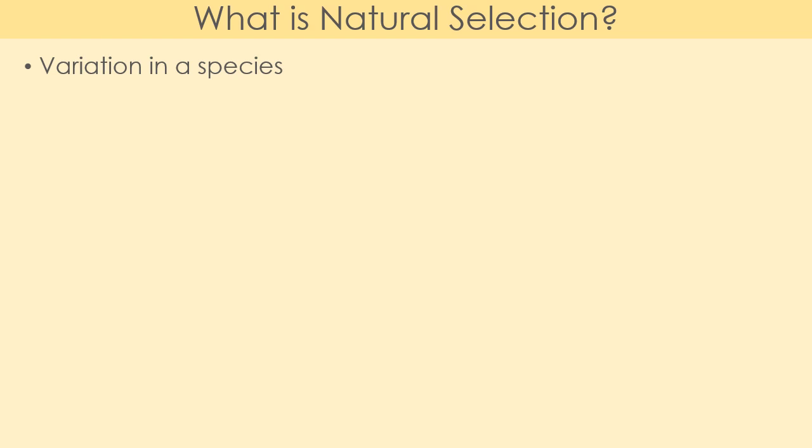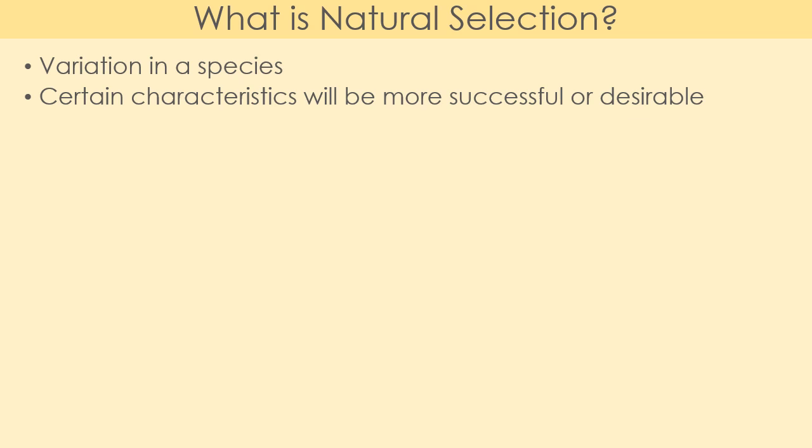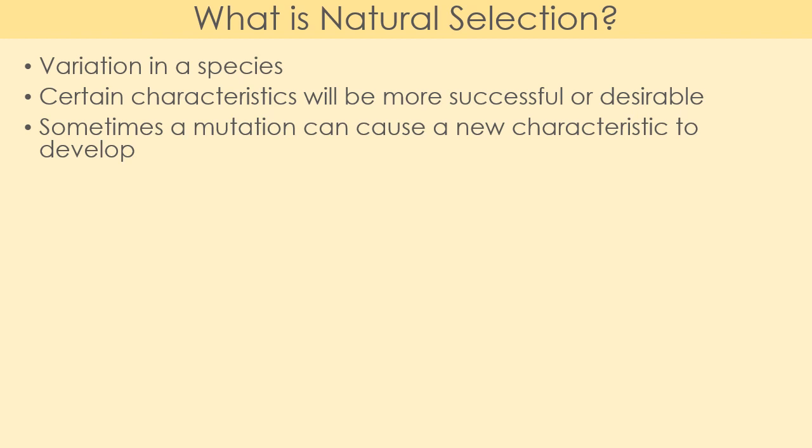So what is natural selection? Within a species we have variation — in humans we have different hair color, eye color, skin tone, and body shape. The same with dogs: large dogs, small dogs, different fur colors. This variation is due to our genotypes, what genes we have, which are then expressed as a phenotype. Certain characteristics will be more successful or desirable, whether for avoiding predators, catching prey, or attracting a mate.